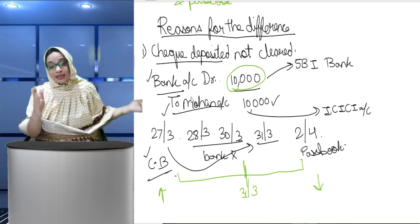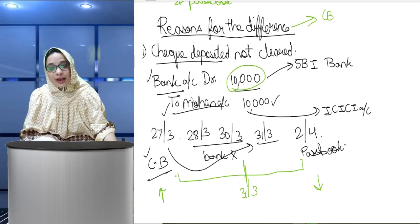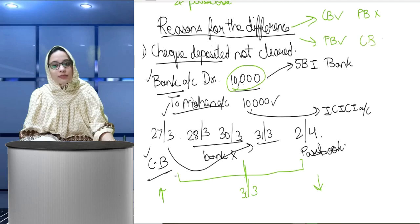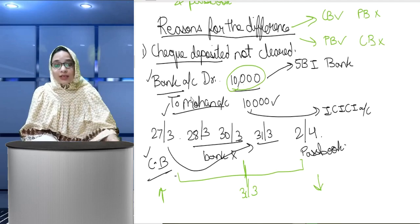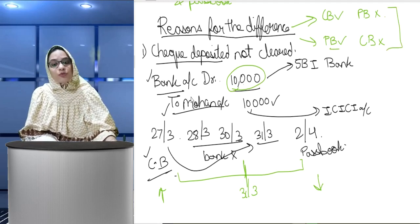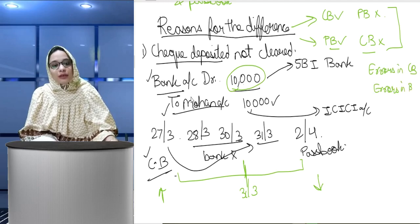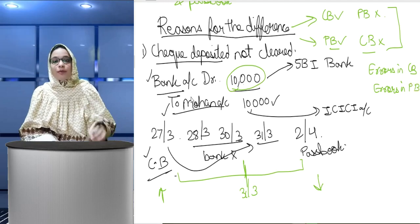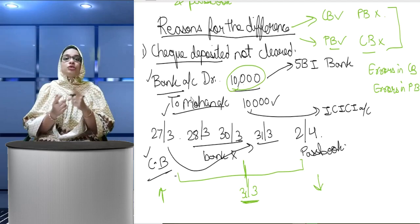So the reasons for differences between cash book and pass book balances are: some entries are recorded in cash book but not in pass book, and some entries are recorded in pass book but not in cash book. I have discussed one reason just now. In my next video, I will discuss all the reasons — those in cash book not in pass book, those in pass book not in cash book, and also errors that can occur in either cash book or pass book.